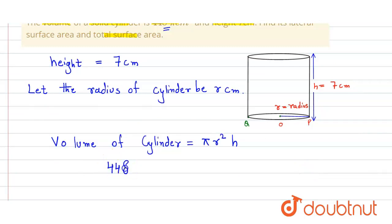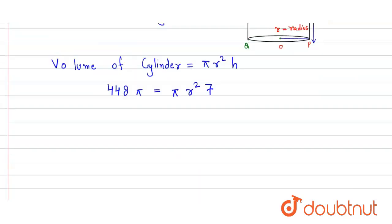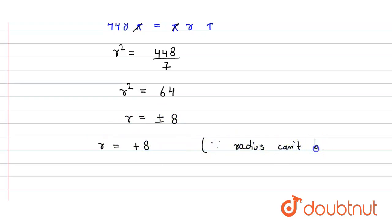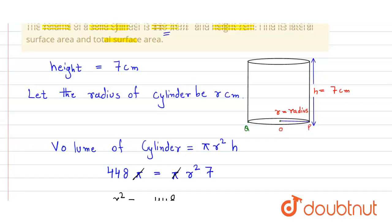So we put the values: 448π = π × r² × 7. Pi cancels on both sides, giving r² = 448 divided by 7, which equals 64. Therefore r = ±8. Since radius cannot be negative, we take r = 8 centimeter.